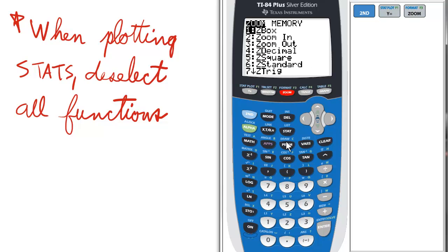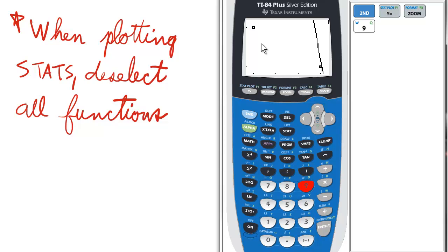And then you select zoom and number 9 for zoom stats. And you see your dots, which is what you want. Oh, and what's this nasty line doing?